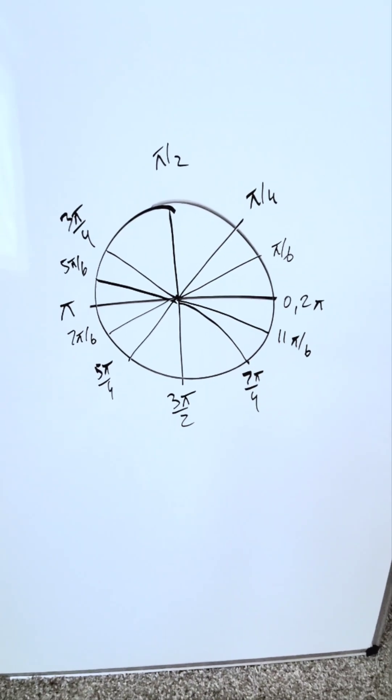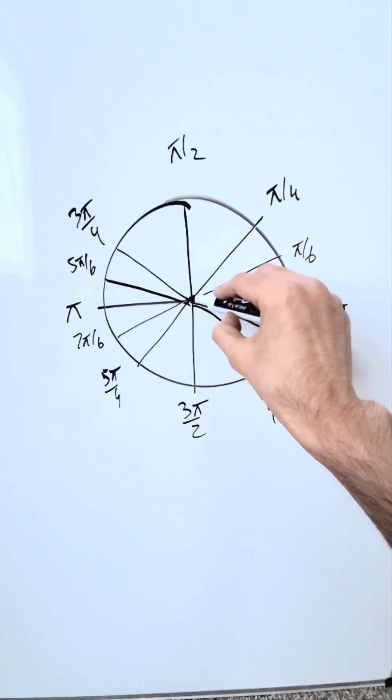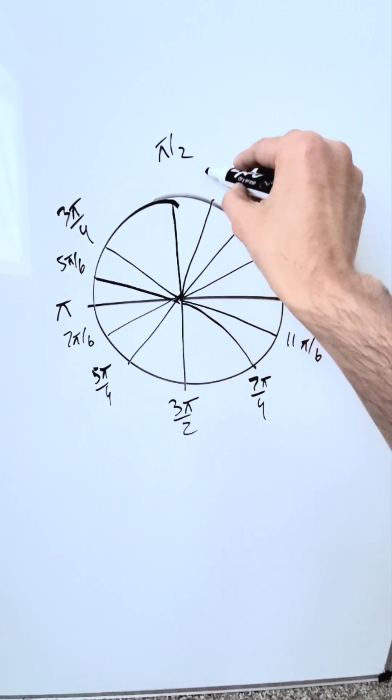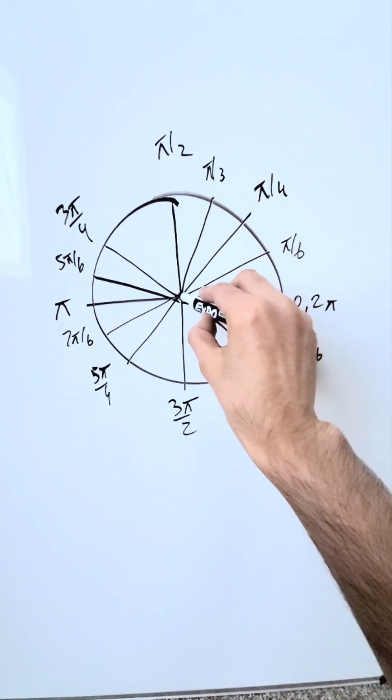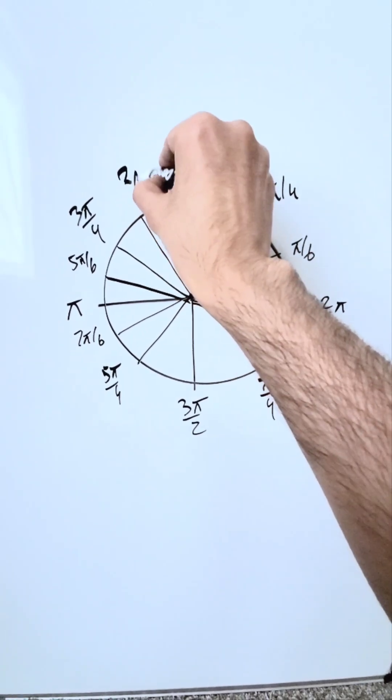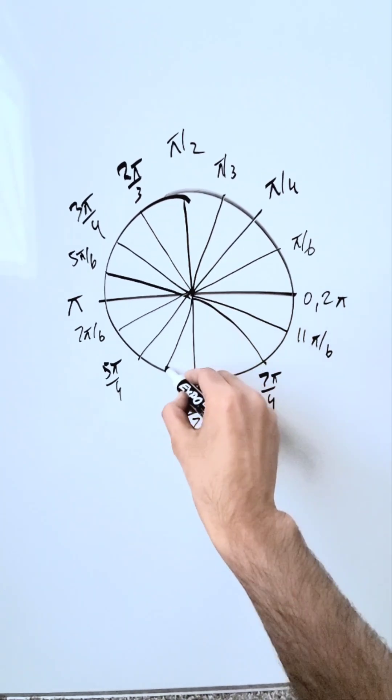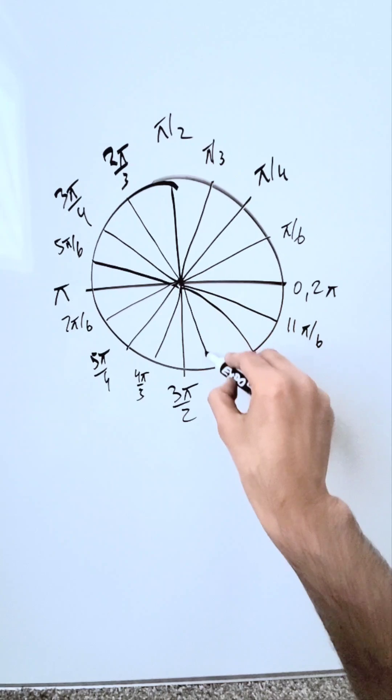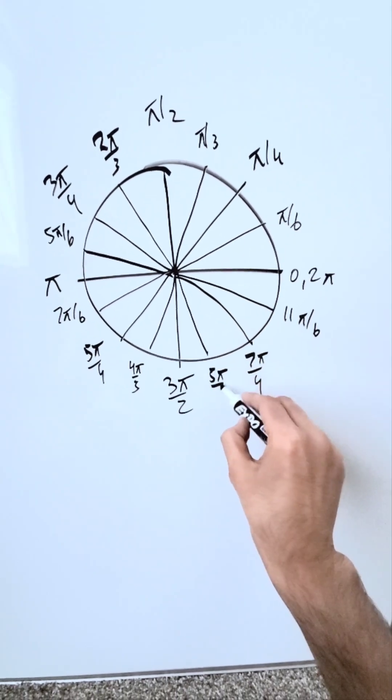What remains now are your 60 degree angles. They'll have denominators of 3. Here's 60. Remember, nothing is drawn to scale here, but this is my 60, and it'll be π over 3. Here's 120. Twice that, so it's 2π over 3. Here's 240. I will say that's 4π over 3. And lastly, I have 300 right here. We'll call that 5π over 3.